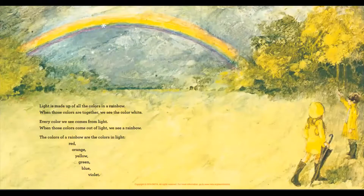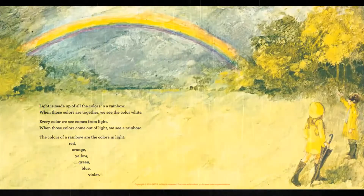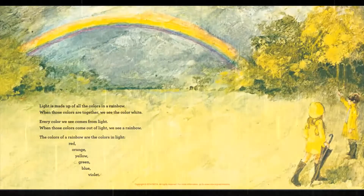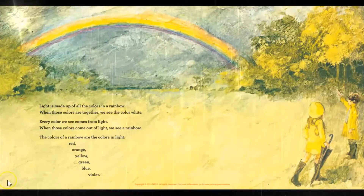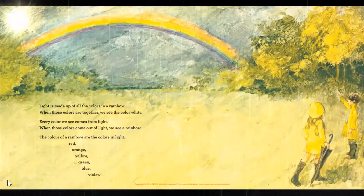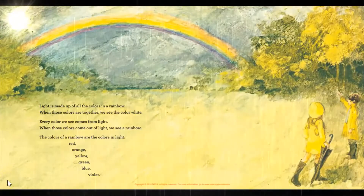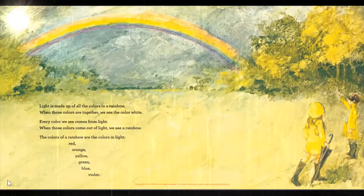Light is made up of all the colors in a rainbow. When those colors are together, we see the color white. Every color we see comes from light. When those colors come out of light, we see a rainbow. The colors of a rainbow are the colors in light: red, orange, yellow, green, blue, violet.